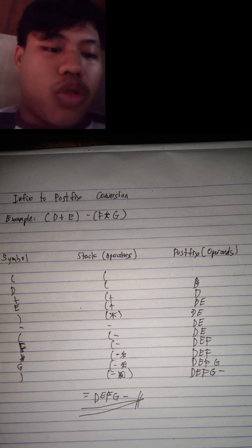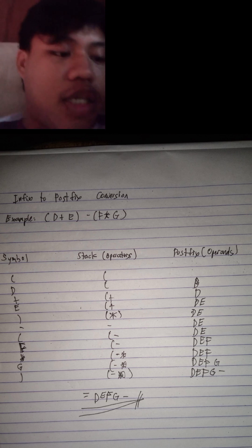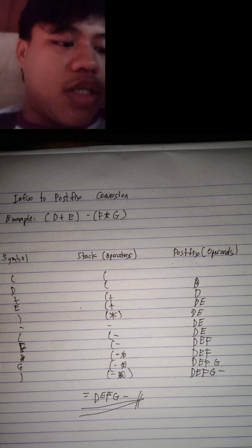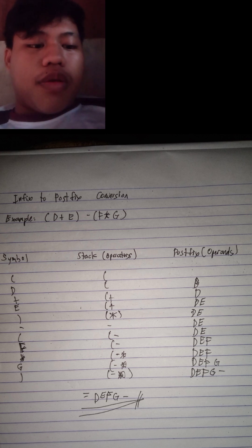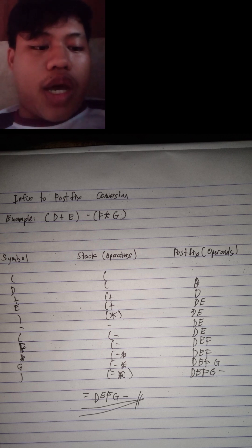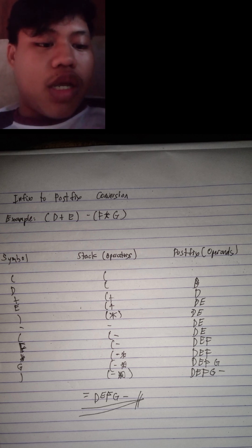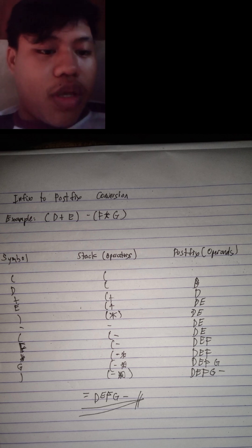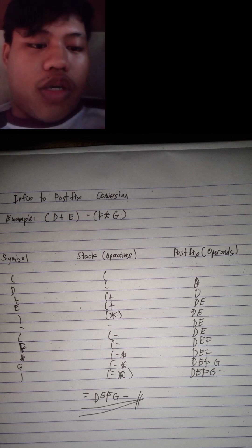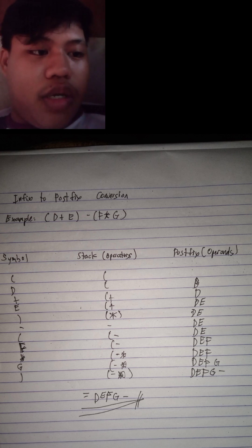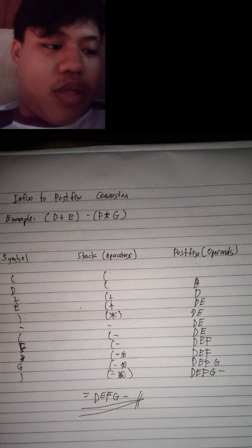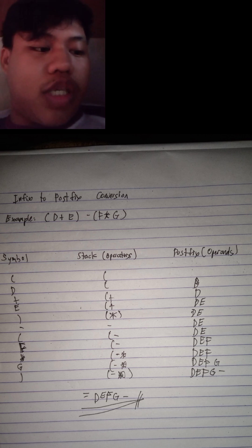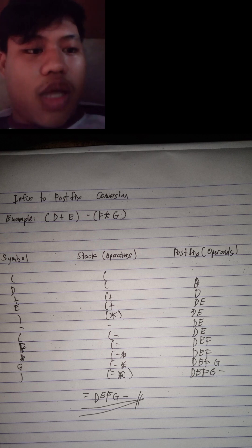Because both are also operands. The next line: you will put the close parenthesis in the symbol. In the stack, you will put the open parenthesis, plus, and close parenthesis. In postfix, the close parenthesis will pop up. The next line: you will put the minus in symbol, and also put the minus in the stack operators.